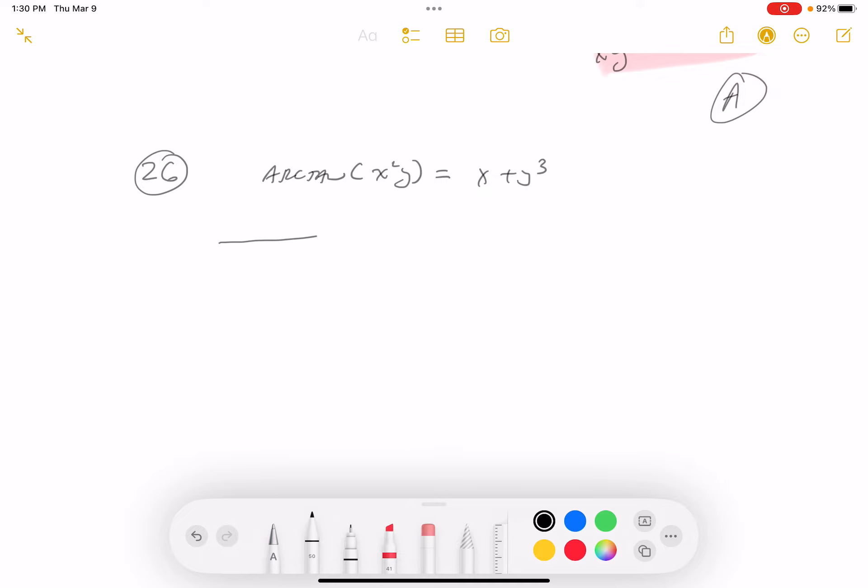Let's differentiate. You're going to get 1 over 1 plus its argument squared. That's going to be x to the 4 y squared times the derivative of the inside.